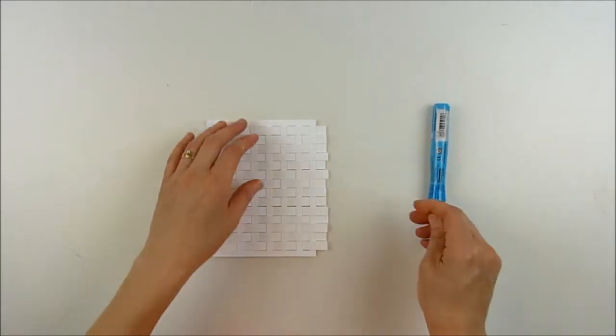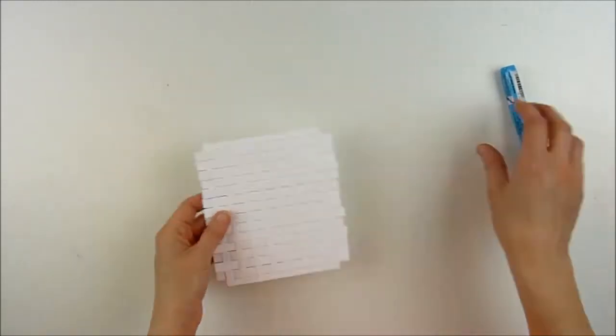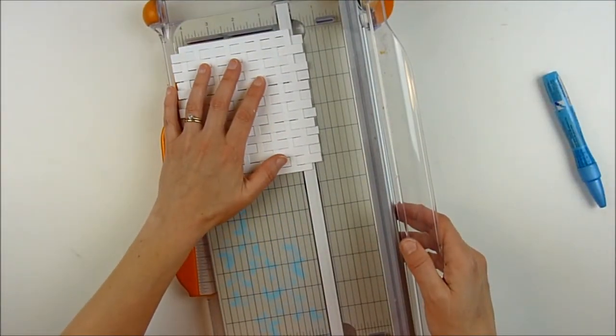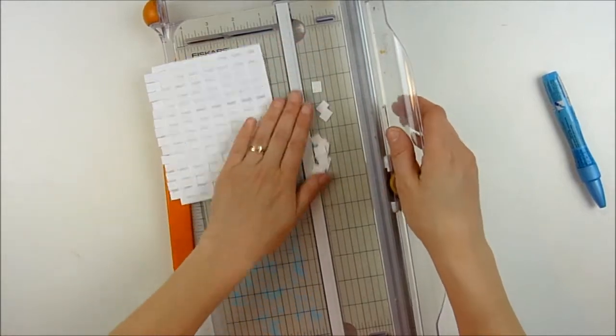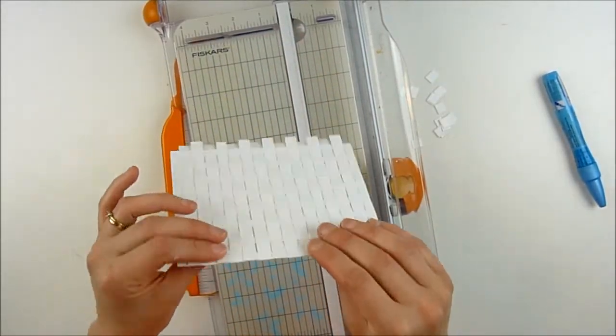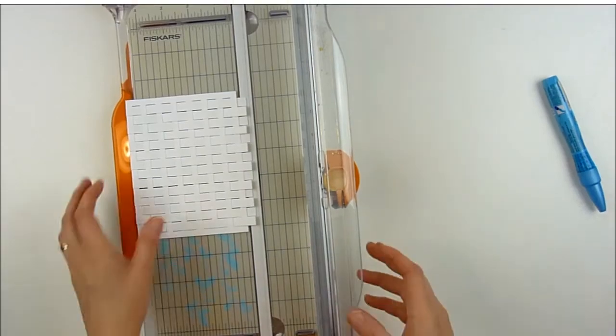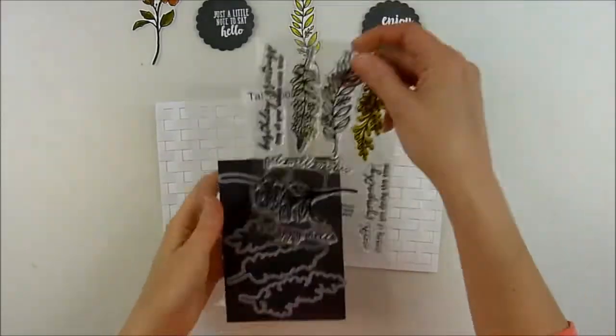Then I use my paper trimmer and just trim off the excess on the side. I'm lining it up carefully—you could trim it a little smaller, but I just lined it up to get the extra off of each side. Now I'm going to move on and add the rest of the embellishments on my card front.